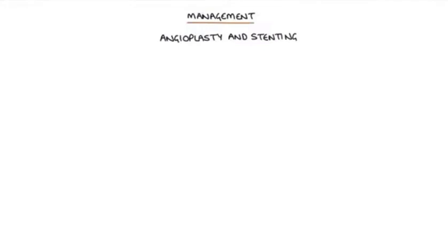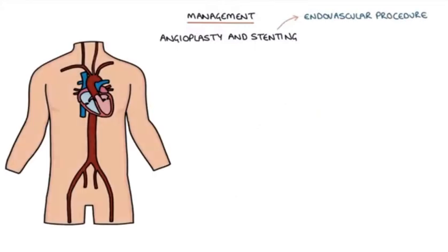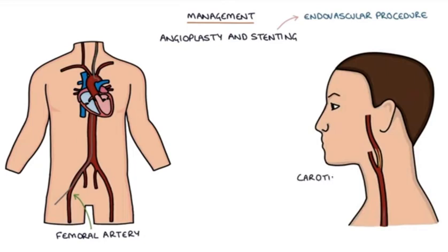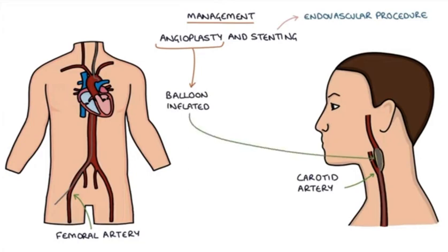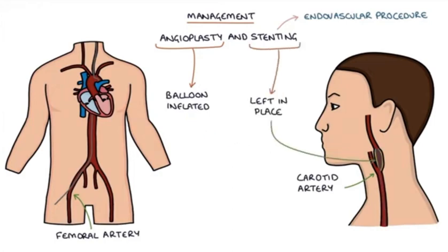Angioplasty and stenting is an alternative to endarterectomy. This is an endovascular procedure which involves a catheter inserted into the femoral artery in the groin, passed through the aorta under x-ray guidance and up to the affected carotid artery. A balloon is inflated in the narrowed area to widen the lumen of the artery — this is called angioplasty. A stent is then left in place to keep the artery open — this is called stenting.